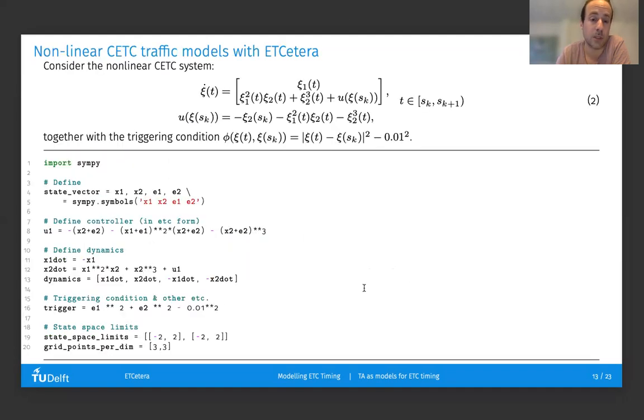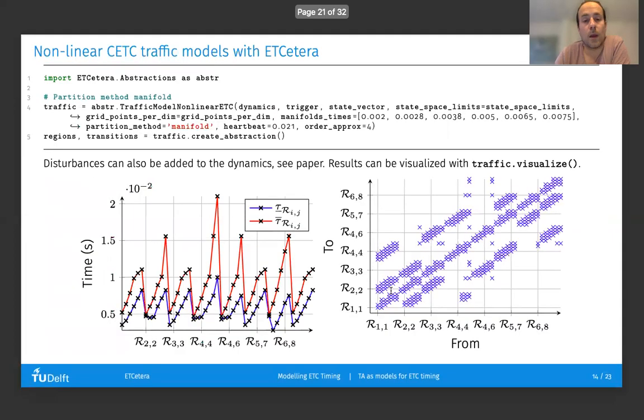Similarly, in the case of nonlinear systems, this can be done in essentially the same way, but now we need to specify the dynamics and the triggering condition symbolically using SymPy. Once this is done, one can simply call the method implemented in ETCetera to construct these abstractions. Moreover, one can visualize these abstractions in the form of plots showing the inter-event time intervals associated to each region and the map of transitions between regions, as visualized in the picture on the right.